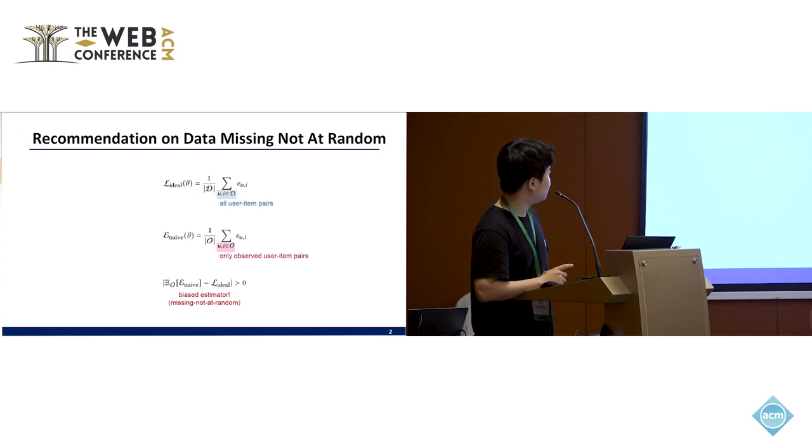However, as I said, the recommendation data is missing not at random, which means popular users or popular items contribute more to the naive estimator. So the naive estimator would be a biased estimator and cannot appropriately estimate the ideal loss function.